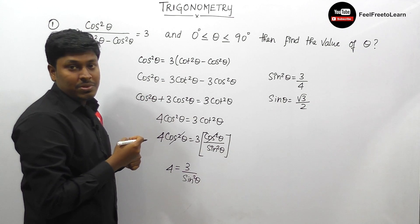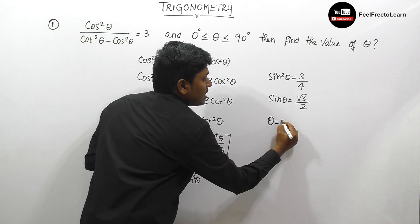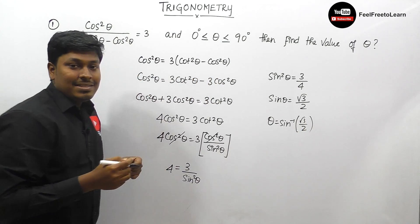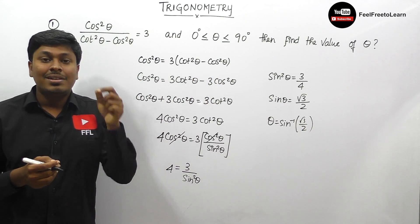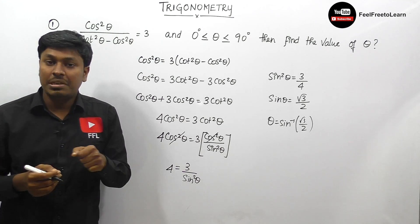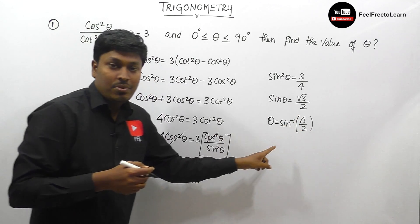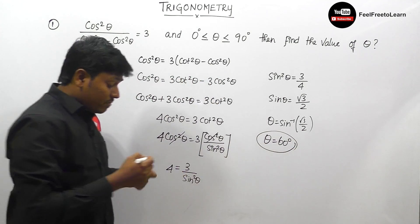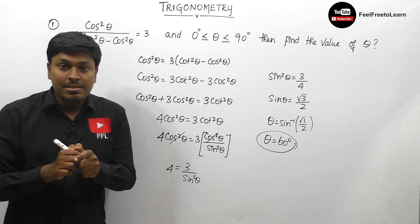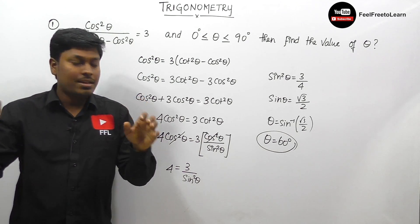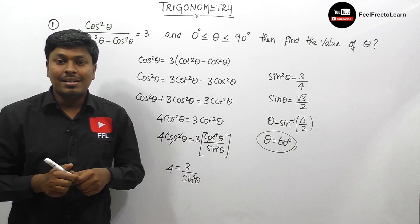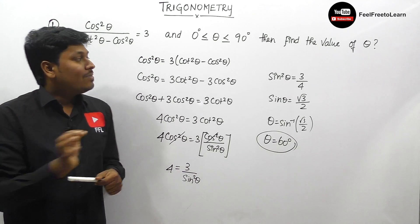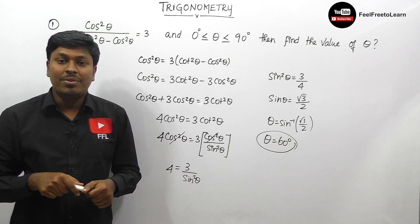Since sin θ equals √3/2, then θ equals sin⁻¹(√3/2). From lesson number 2, sin 60° equals √3/2, so θ equals 60°. Before finalizing, remember the range must be 0° to 90°. We got θ equals 60°, which is within range, so the answer for question number 1 is 60°.